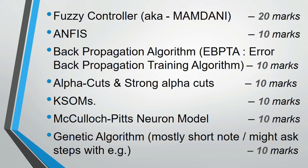Next comes ANFIS, which is the Adaptive Neuro Fuzzy Inference System. This is almost always asked. There is a whole video that explains it in five steps.